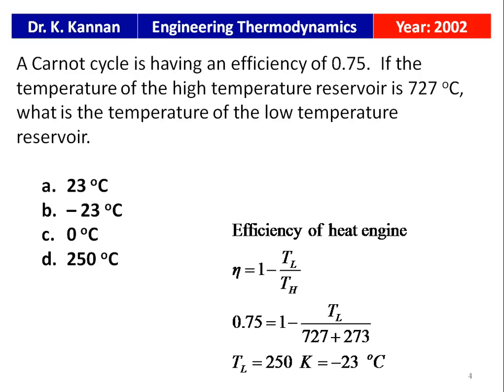The efficiency of the heat engine: η = 1 − T_L/T_H. T_L is the temperature of the low temperature reservoir, T_H is the temperature of the high temperature reservoir. Efficiency is given as 0.75 = 1 − T_L/(727 + 273). Solving this equation, T_L = 250 Kelvin, which is −23°C. The correct option is B: −23°C.